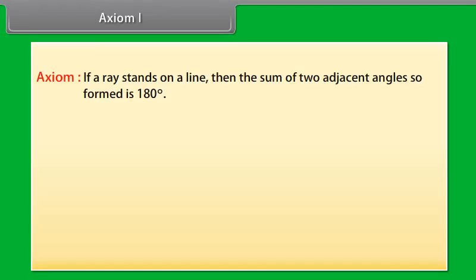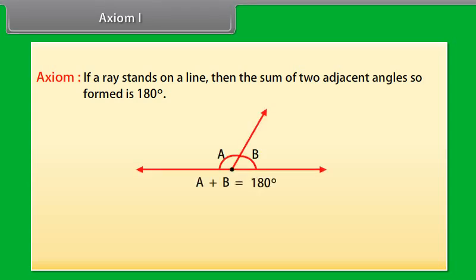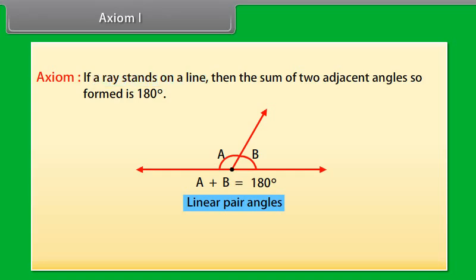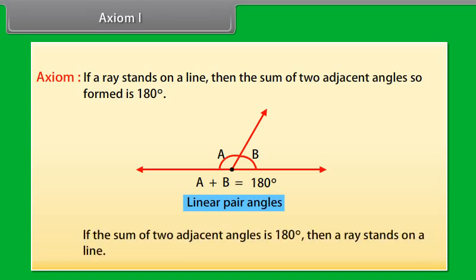This gives us Axiom 1: if a ray stands on a line, then the sum of two adjacent angles so formed is 180 degrees. We know that if the sum of two adjacent angles is 180 degrees, then they are called a linear pair of angles. Now let us write this axiom the other way — taking the conclusion as given and the given as the conclusion. It becomes: if the sum of two adjacent angles is 180 degrees, then a ray stands on a line, that is, the non-common arms form a line.